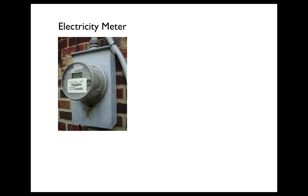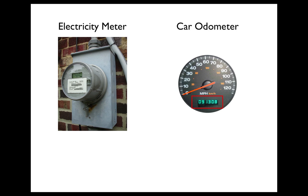Your electricity bill is based on the number of kilowatt hours you use each month. Once a month, the utility company sends an employee to read your electricity meter. An electricity meter on your home is similar to an odometer on a car. Just as an odometer tells you how many miles you've driven, an electricity meter records how many kilowatt hours you've used in your home.